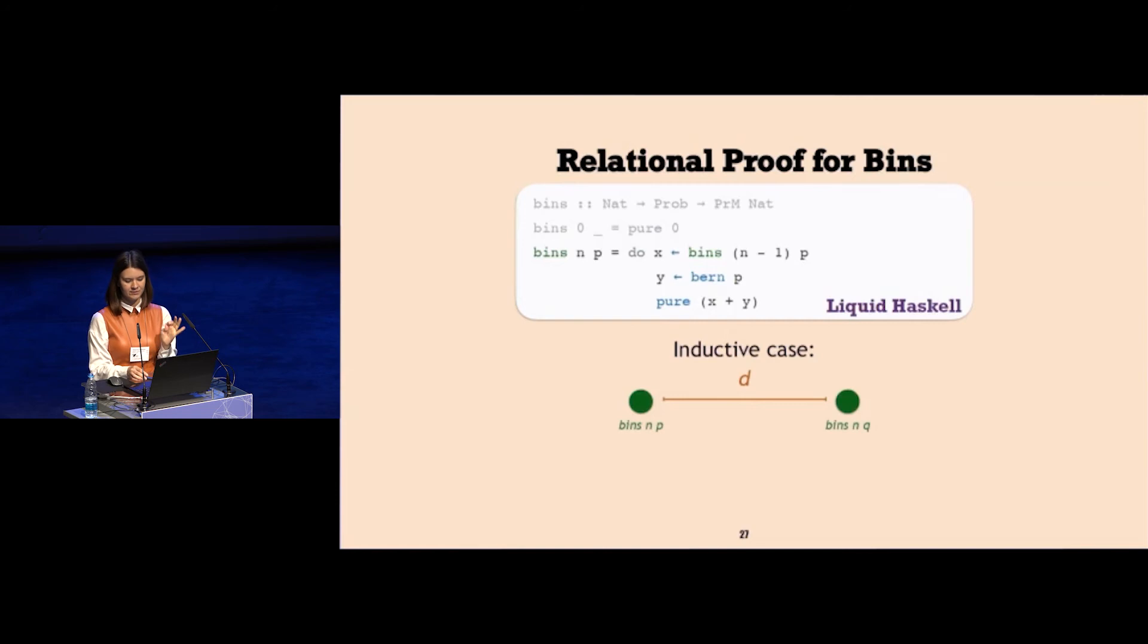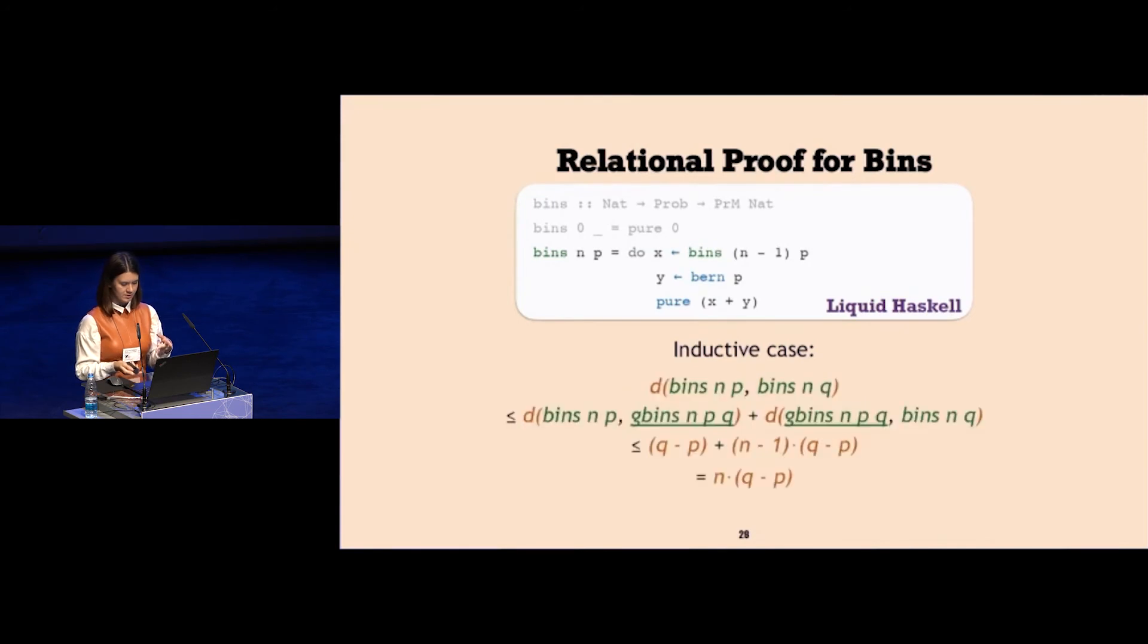This case is proved. Now to showcase that we also support non-syntax directed proofs, the inductive case will be a little bit different. In the inductive case, I still want to prove the distance between bins p and bins q, and I do it through the intermediary, through the function in the middle, the ghost function that I synthetically construct. I upper bound the distance between initial functions by two pairs of distances.